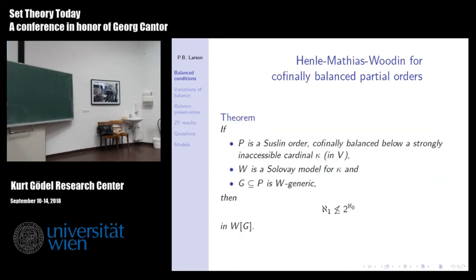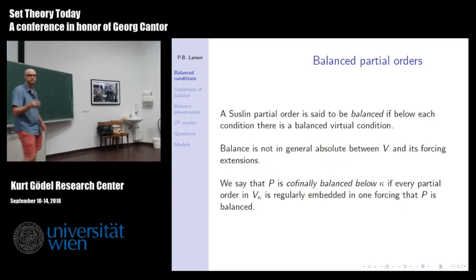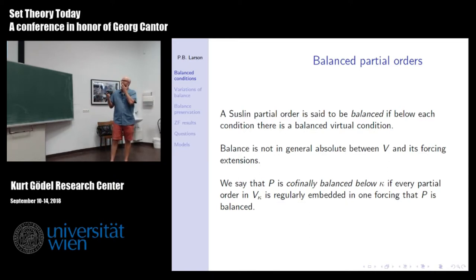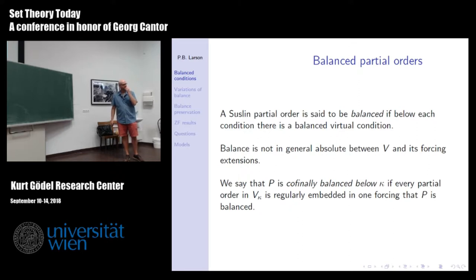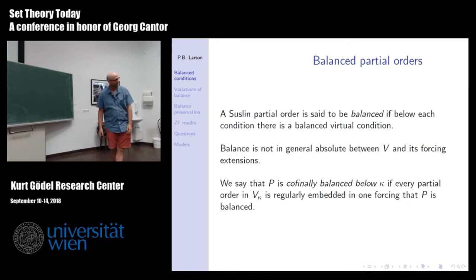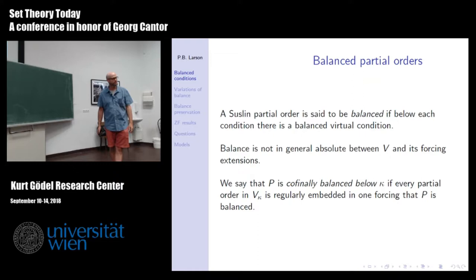Cofinally balanced: balance meant there were balanced conditions below everything. You can force to destroy or recover it. Cofinally balanced below κ means among the partial orders in V_κ, if I force to destroy balance, I can always force with another partial order in V_κ and recover balance. The recovering forcings can be anything — we're not assuming anything about what they're like.